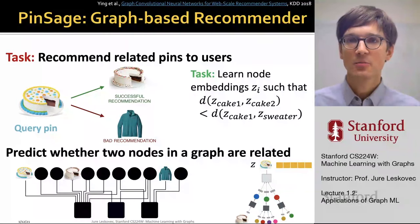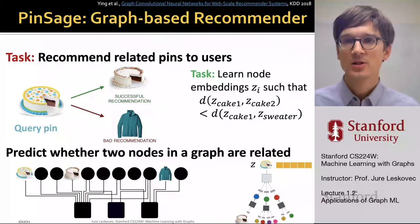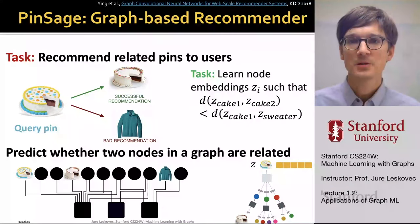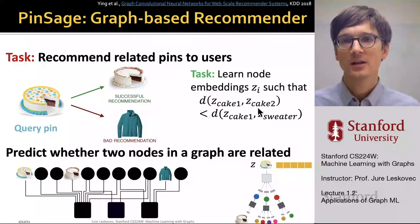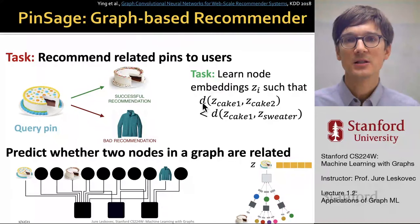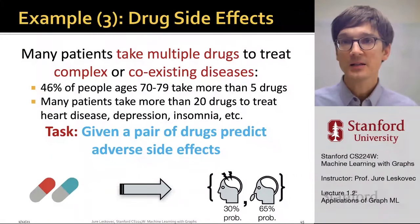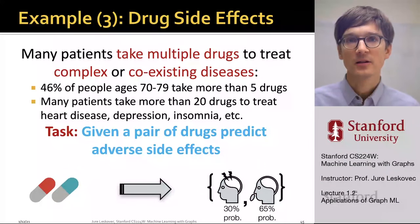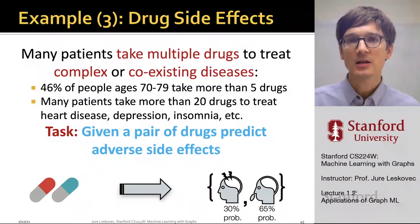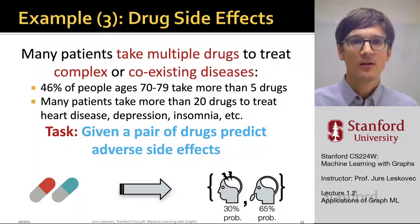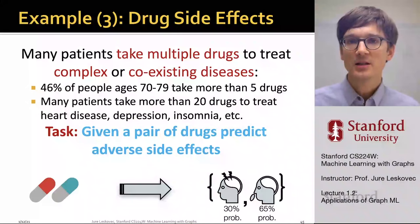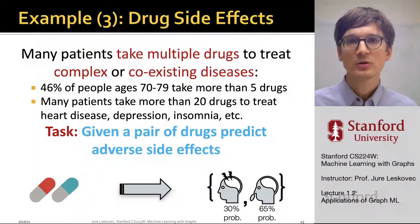Images plus the graph structure leads to much better recommendations than using images alone. Another example of a link-level prediction task is drug combination side effects. The problem is that many patients take multiple drugs simultaneously to treat complex and coexisting diseases. For example, in the United States, 50% of people over 70 years of age simultaneously take four or five or more drugs, and there are many patients who take 20-plus drugs.